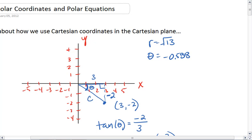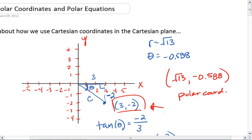The way we then express this point in polar coordinates is root 13, comma, negative 0.588. And that's in polar coordinates. And this original one was in Cartesian.